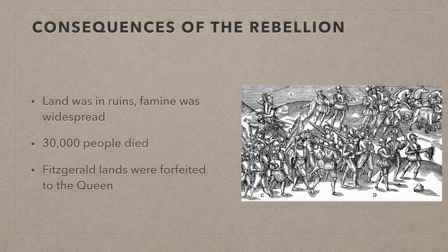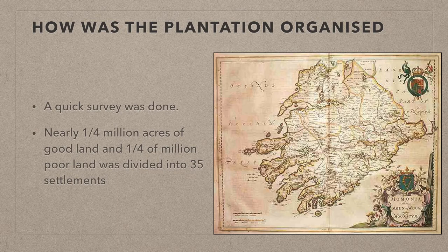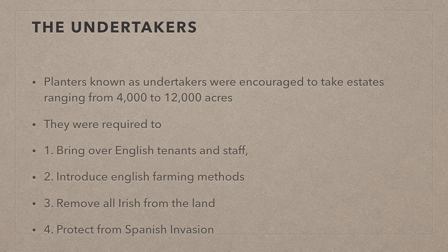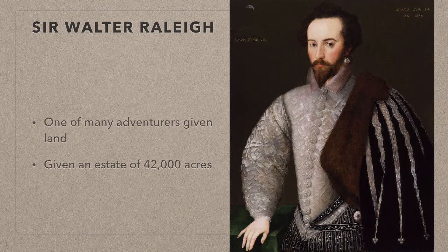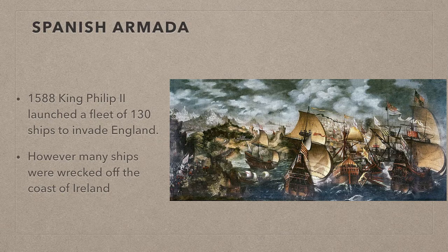A quick survey of the land was done, and nearly a quarter of a million acres of good land and a quarter of a million acres of poor land were identified and divided up into 35 settlements. Elizabeth encouraged English planters known as undertakers, who were given estates ranging from 4,000 to 12,000 acres, so long as they promised to undertake Elizabeth's conditions. They were required to bring over English tenants and staff to work their estates, to introduce English methods of agriculture, and to remove all Irish from the land. Sir Walter Raleigh, an English explorer, received a massive estate of 42,000 acres in the Vale of Cork. He was one of many men known as adventurers who were given these gigantic estates in Munster.